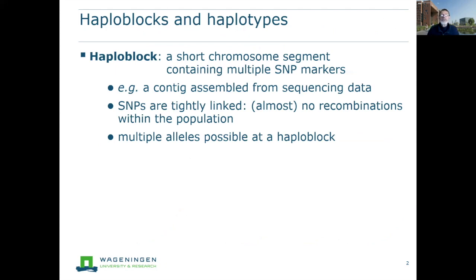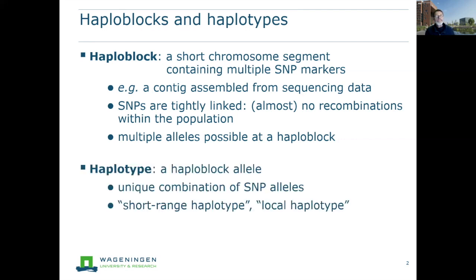First, some definitions. A haploblock is defined here as a short chromosome segment that contains multiple SNP markers — for example, it could be a contig assembled from sequencing data. The SNPs in a haploblock should be tightly linked, so tightly that over the population being studied, there should be almost no recombinations between them. A haplotype is an allele at the haploblock — a unique combination of the SNP alleles in the haploblock. Other names for this are short-range haplotype or local haplotype.